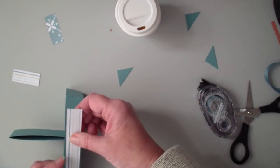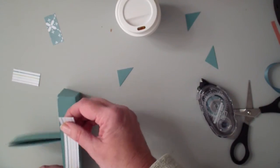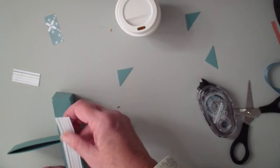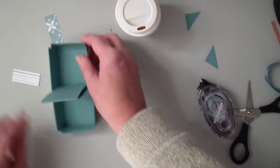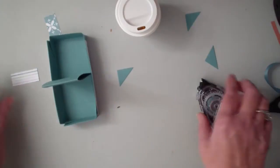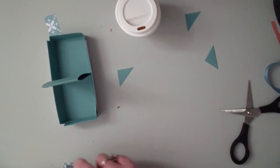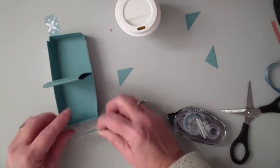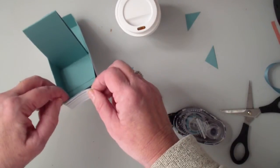I also cut two pieces from that designer series paper that measure 1¾ by ¾. And those go on the ends of your carrier.